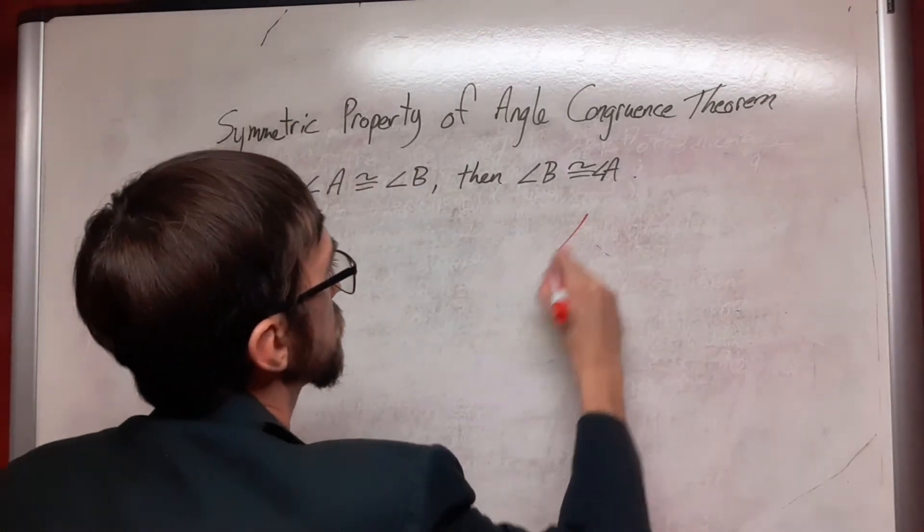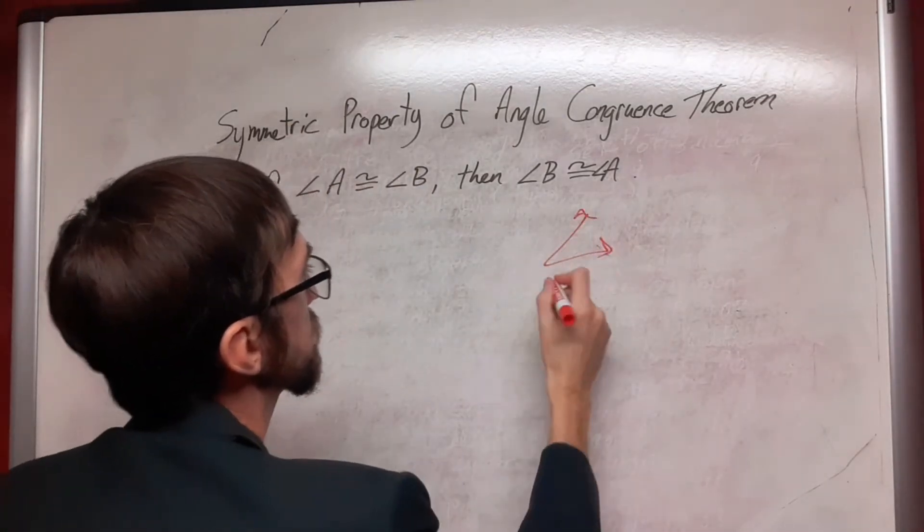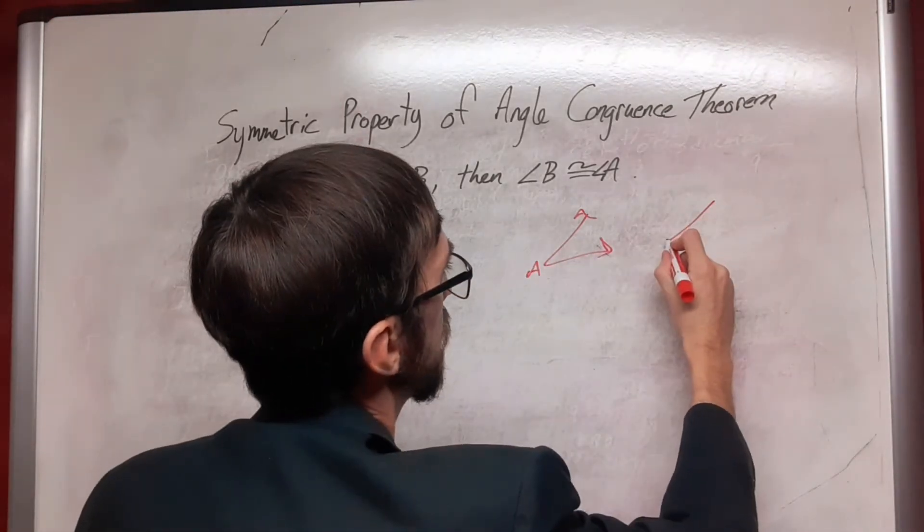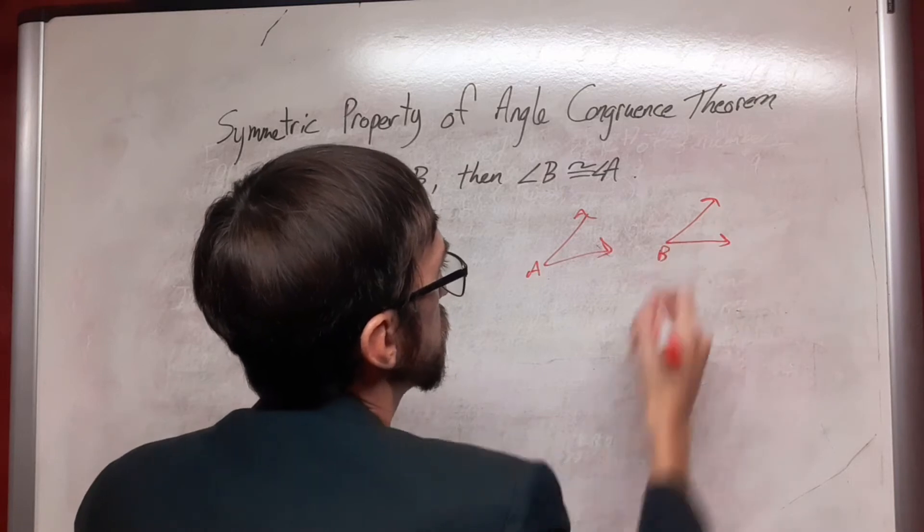So I'm going to start out with some angle, and it's labeled A. So that's the vertex. And I have some other angle here. And this is B.